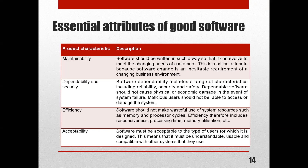The last attribute is acceptability. The software must be acceptable to the type of users for which it is designed. For example, if the software is designed for students, it must be accepted by students. If it is designed for kids, you should design it accordingly. It means the accessibility should be through a proper channel, and the software has to be understandable, usable, and compatible with other systems.